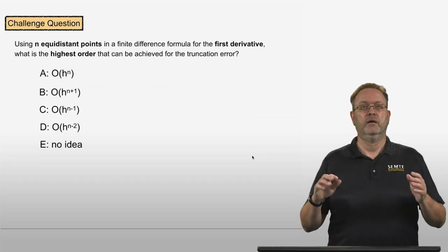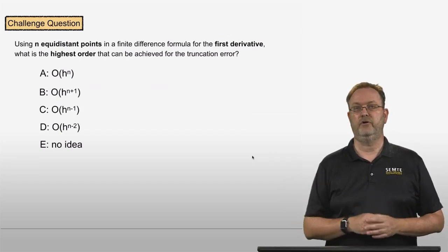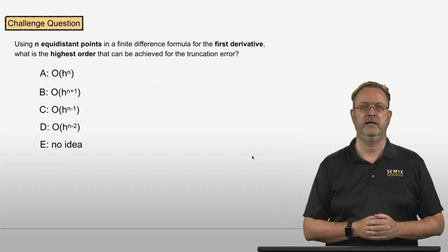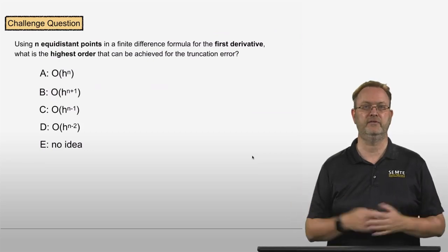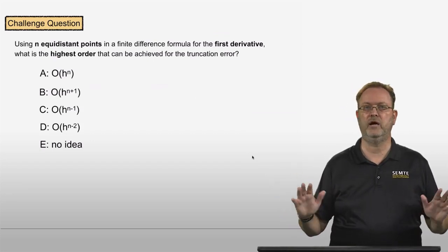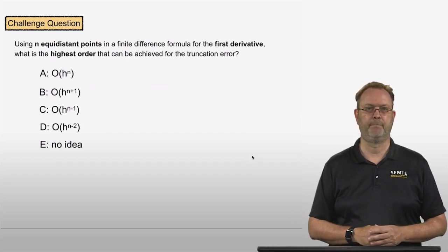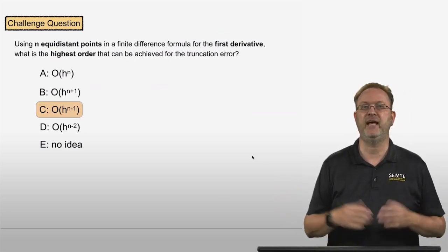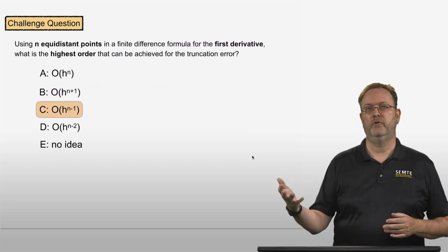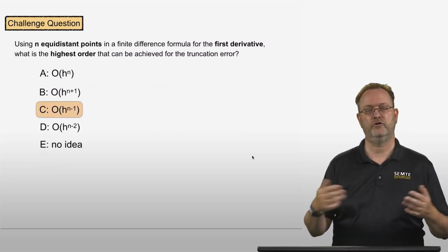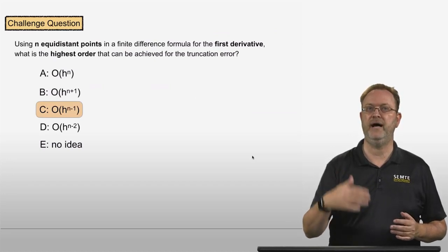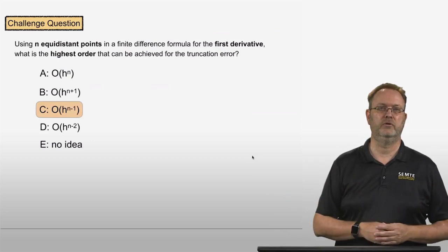Here's the next challenge question. Using n equidistant points in a finite difference formula for the first derivative, what is the highest order that can be achieved for the truncation error — is it n, n plus 1, n minus 1, or n minus 2? The answer is n minus 1. We saw this pattern: with four points we achieved a third order formula; with three points, second order. Adding one additional point improves the order by 1, so with n points, the order is n minus 1.